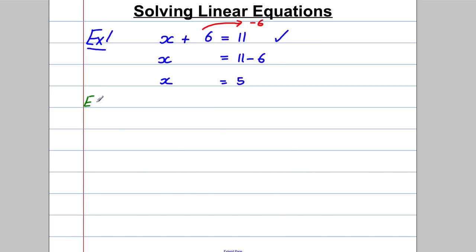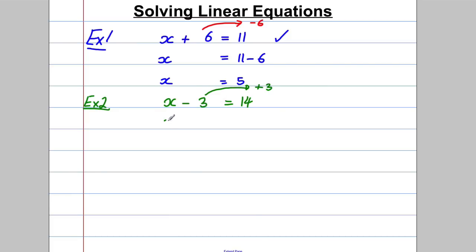Example 2 — let's do one with subtract. Let's say something like X subtract 3 is equal to 14. I add 3 to both sides. Some students like thinking of that negative 3 moving over here and becoming a plus 3. X would therefore be equal to 14 add 3. X would be equal to 17. Check it: 17 take away 3 is 14.